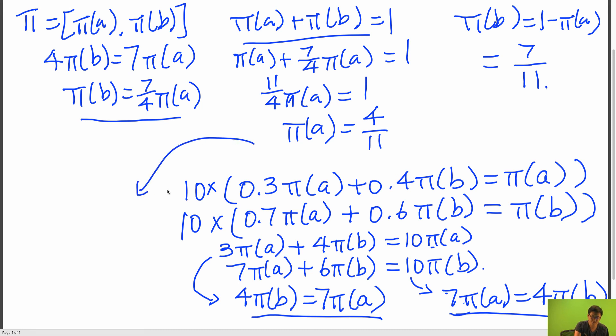So therefore, our stationary distribution pi is just equal to the row vector 4 over 11 and 7 over 11.